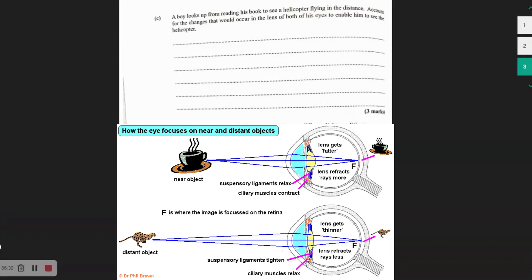So what happens to get the lens thinner? Well, it's simply the opposite of what happened with the lens or with the suspensory ligaments and the ciliary muscles when we are looking at something close.